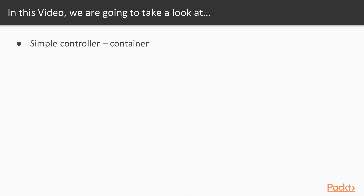Let's start with the first video of this section — simple, once only and loop controllers. During the performance test, we might have a number of samplers and if we want to sort and view them in a sorted manner, we can make use of simple controller where we can organize our samplers and segregate them based on their functionality so that we can view them in sorted order. However, we do not have any other benefit of using simple controller and we'll take a look at it with the help of an example.